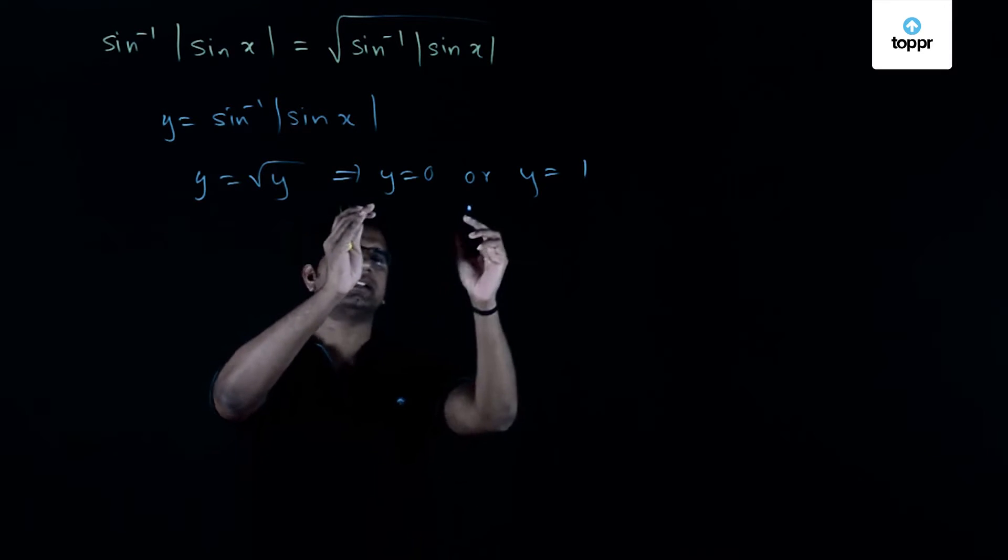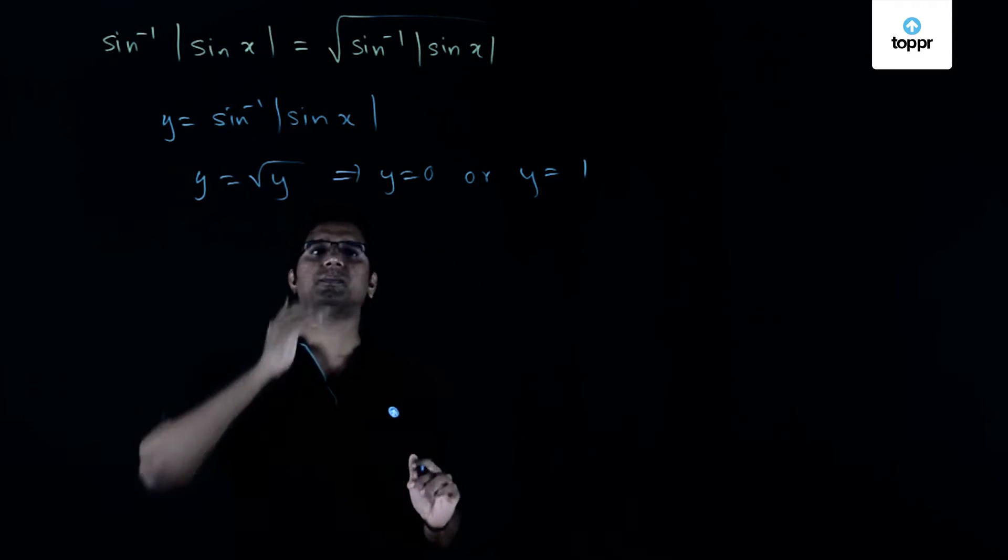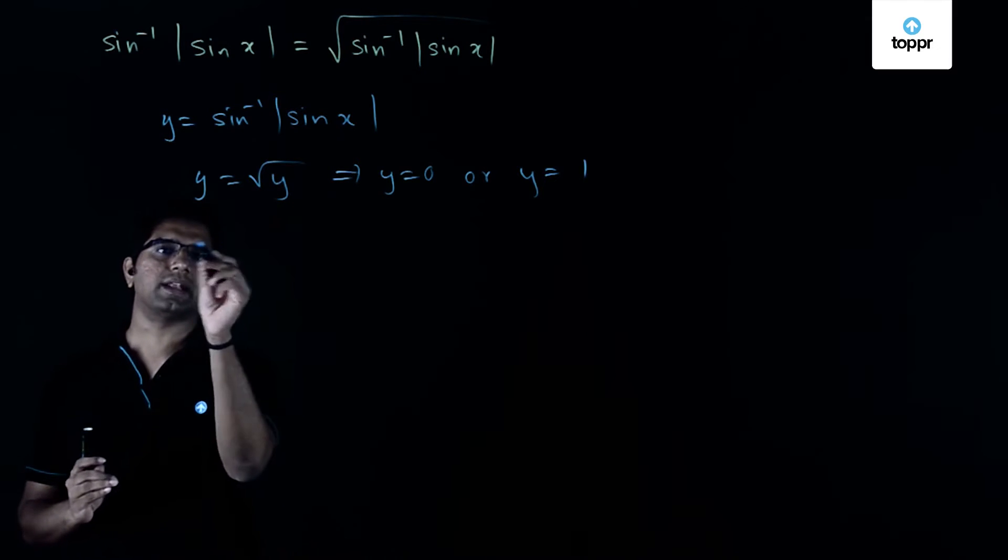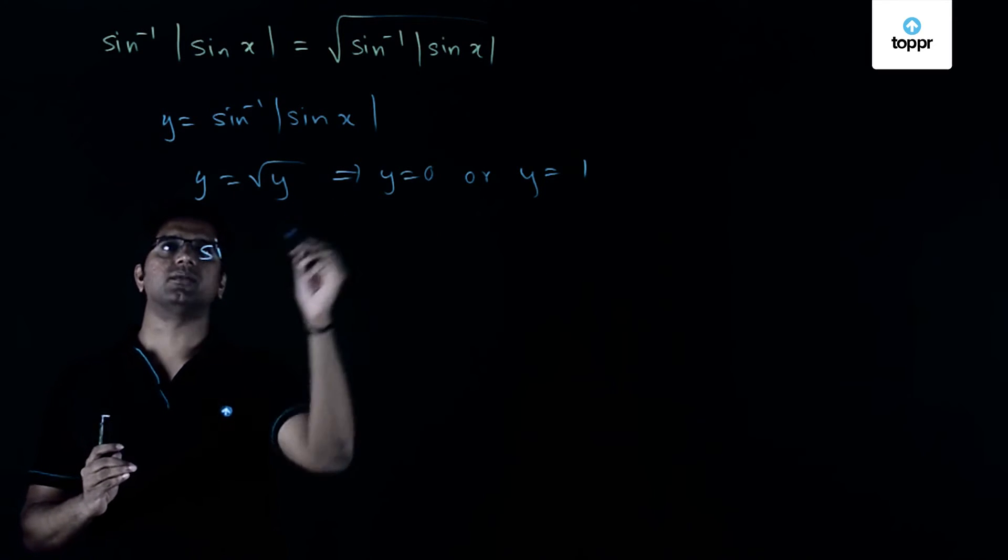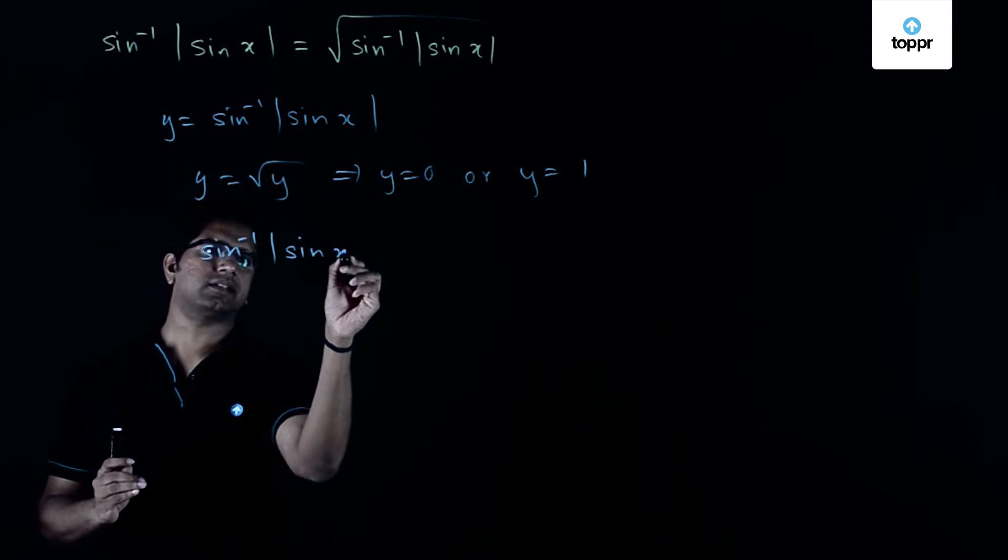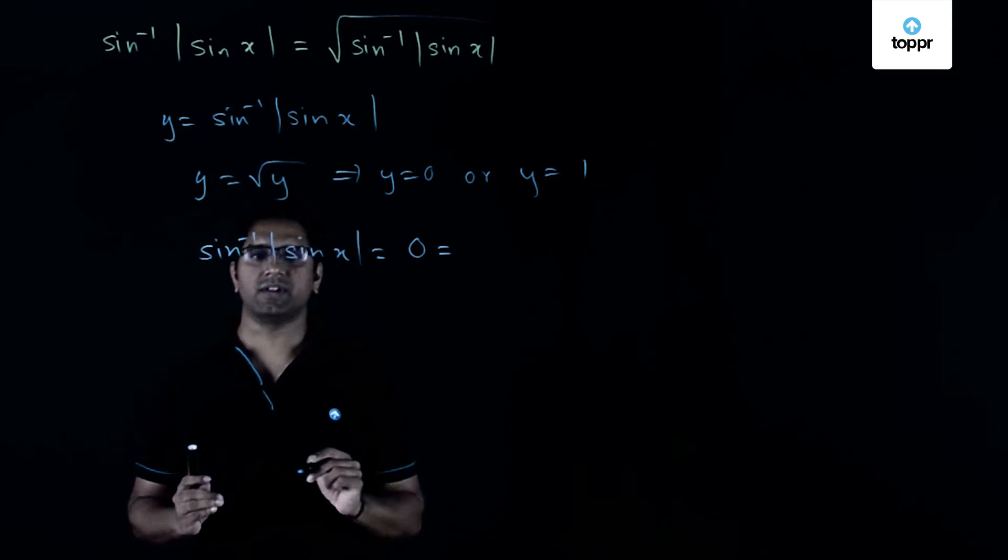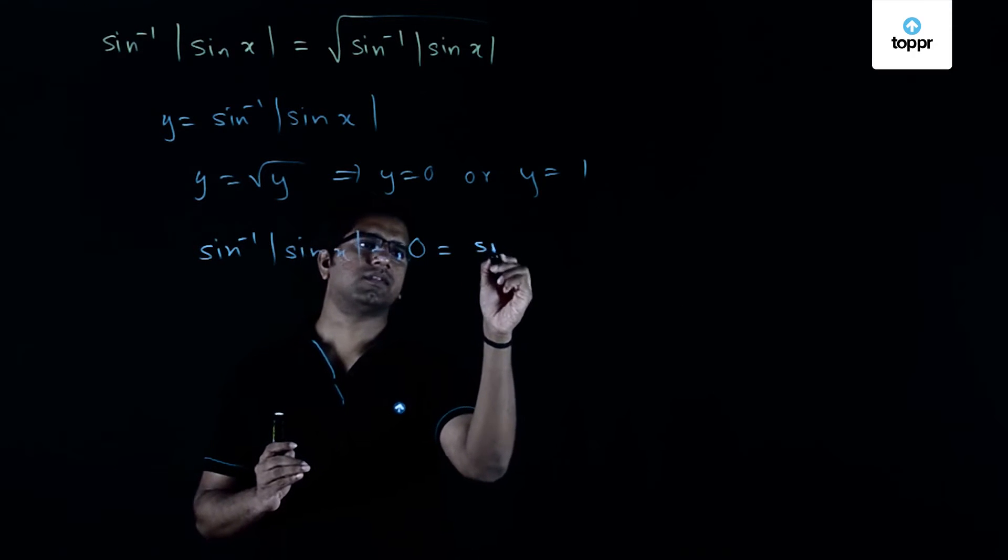Now we have reduced it to basically looking at these two cases. So y equal to 0. When is this possible? So y equals 0 implies sine inverse of mod sine x becomes equal to 0, which can be written as sine inverse of 0 itself.